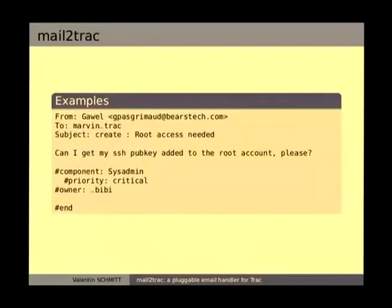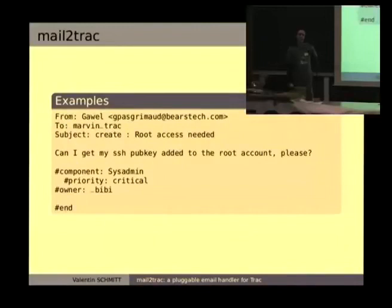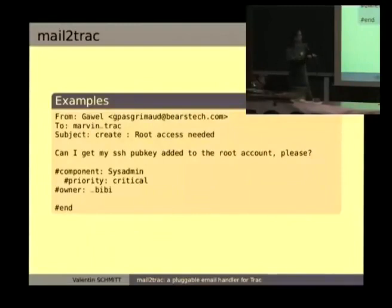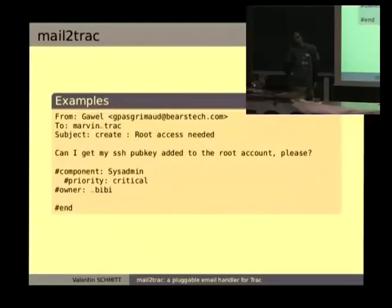Here is a quick example. Gabel is sending an email to Trac Marvin. He wants to create a ticket because he needs root access. He sets the component to 'sysadmin', the priority to 'critical', and the owner to 'BB', which is me. He can also use a tag to indicate the end of his request — that's not mandatory, but it's convenient.